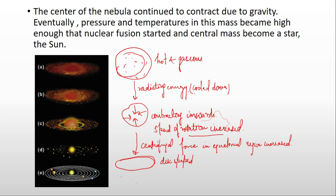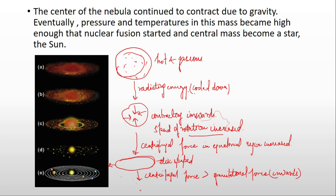This continuation of contraction and cooling took place, and finally a stage came when the centrifugal force became greater than the gravitational force — which was attracting the whole mass of nebula inwards. So when the centrifugal force became greater, a ring-shaped gaseous ring was separated out from the nebula.